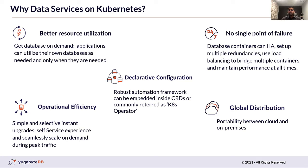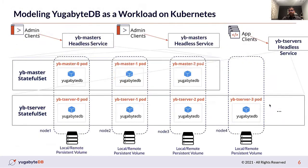And the last benefit is that it gives you the freedom to run anywhere — easy portability between different clouds and on-premise. The database has two distributed services. The first one is YB Master, which is responsible for keeping your system metadata, coordinating system-wide operations like CREATE, ALTER, and DROP DDL commands, and maintaining operations such as load balancing. The second one is the YB-TServer, the actual data node responsible for hosting and serving your user data. Both YB Master and YB-TServer are modeled as independent StatefulSets.